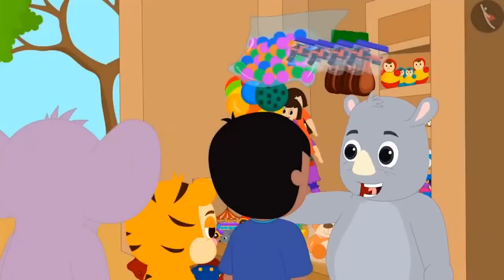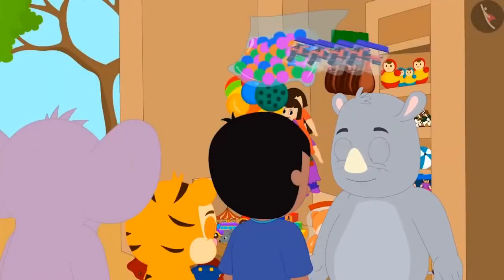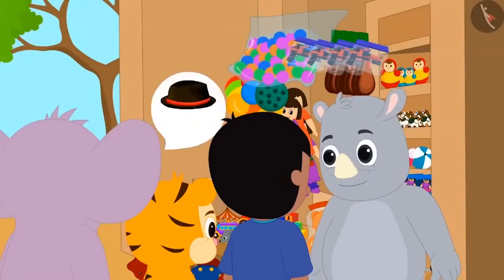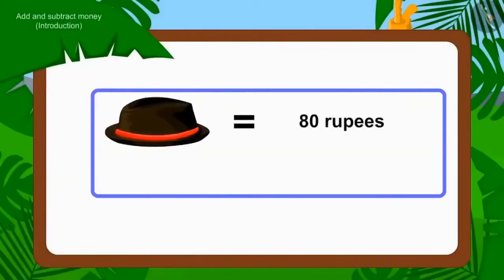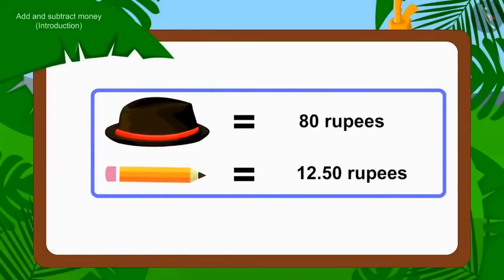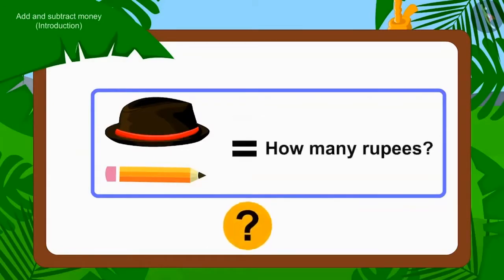All three friends have come to Gaggoo's toy store. They have to buy a hat and a pencil. The cap is Rs. 80 and the pencil is Rs. 12.50. Children, can you tell how much money will they have to pay to buy the gift?